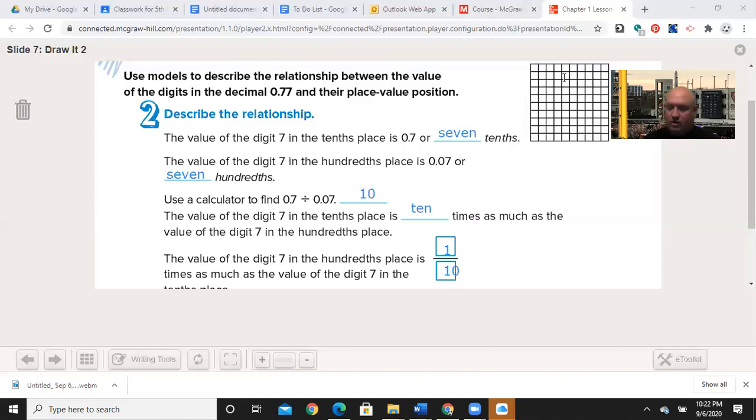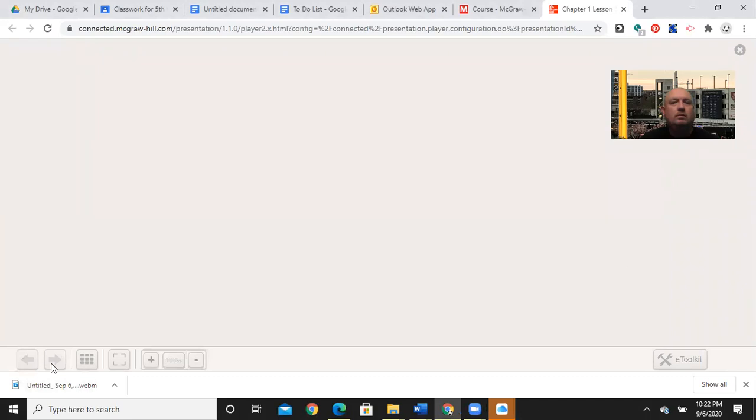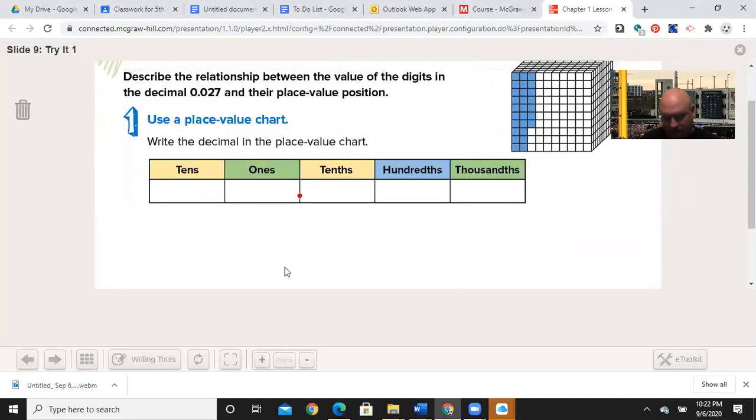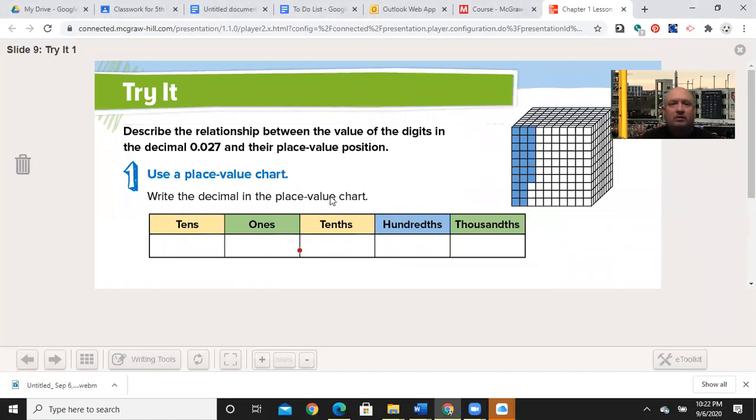We're going to move on into the try it. Describe the relationship between the value of the digits in the decimal 0.027 and their place value position. So the first thing I need to do is write this in. Well, there are zero ones, there are zero tenths, there are two hundredths, and there are seven thousandths. 0.027. Make sure you copy that in before we move on to the next one.